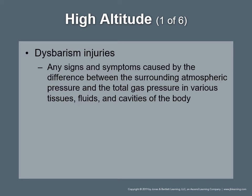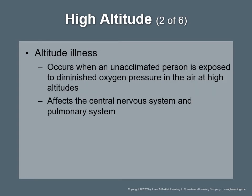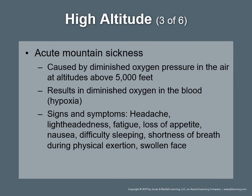High altitude dysbarism injuries: any signs and symptoms caused by the difference between surrounding atmospheric pressure and total gas pressure in various tissues, fluids, and cavities of the body. Altitude illness occurs when an unacclimated person is exposed to diminished oxygen pressures at high altitudes, affecting the central nervous and pulmonary systems. Acute mountain sickness is caused by diminished oxygen pressure at altitudes over 5,000 feet, resulting in hypoxia. Signs and symptoms include headache, lightheadedness, fatigue, loss of appetite, nausea, difficulty sleeping, shortness of breath during physical exertion, and swollen face.